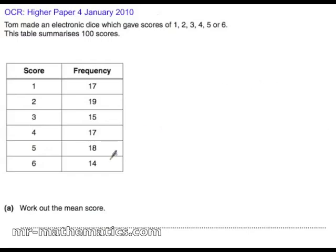We are going to calculate the mean score of this data in a frequency table. Now the mean will always be the total of the data divided by the sample size.